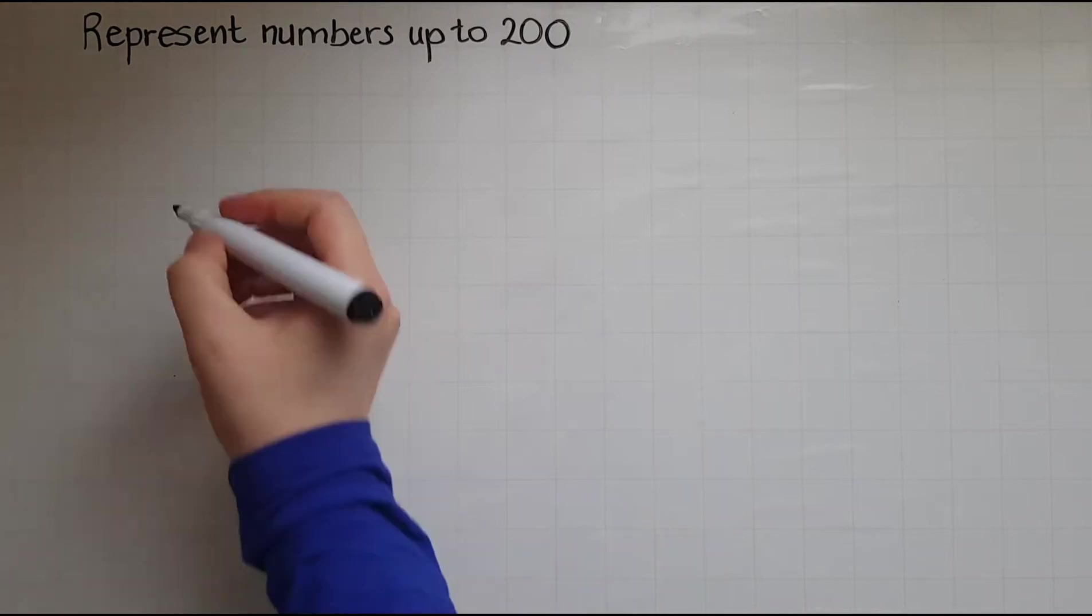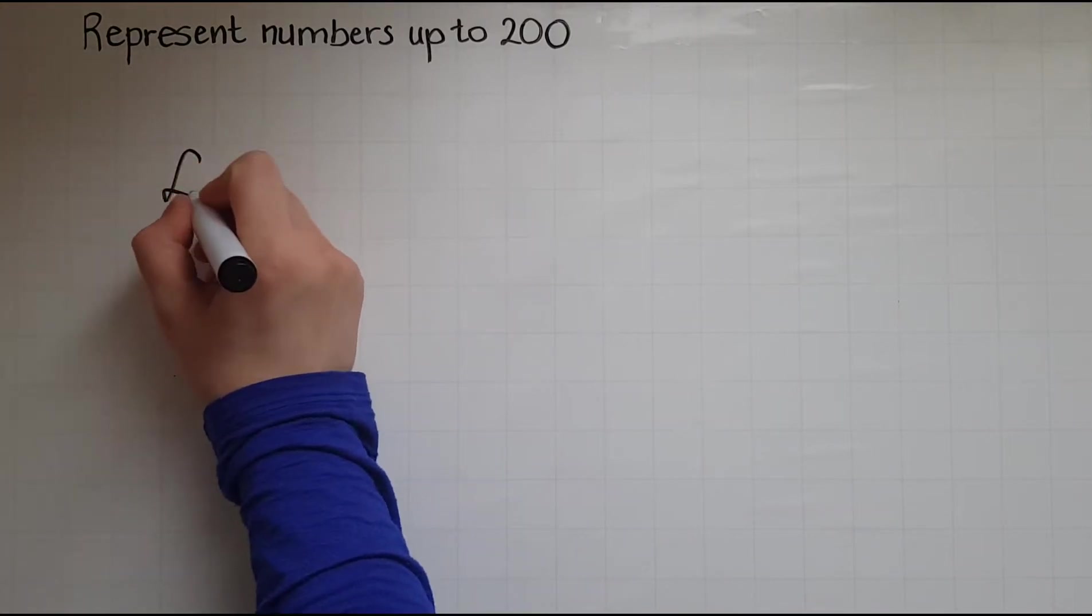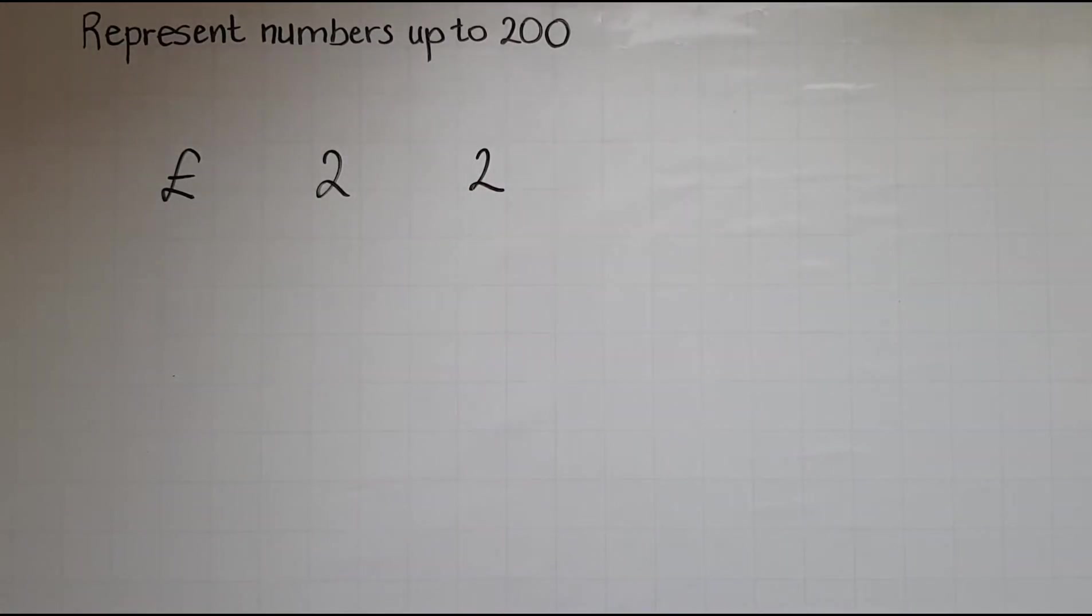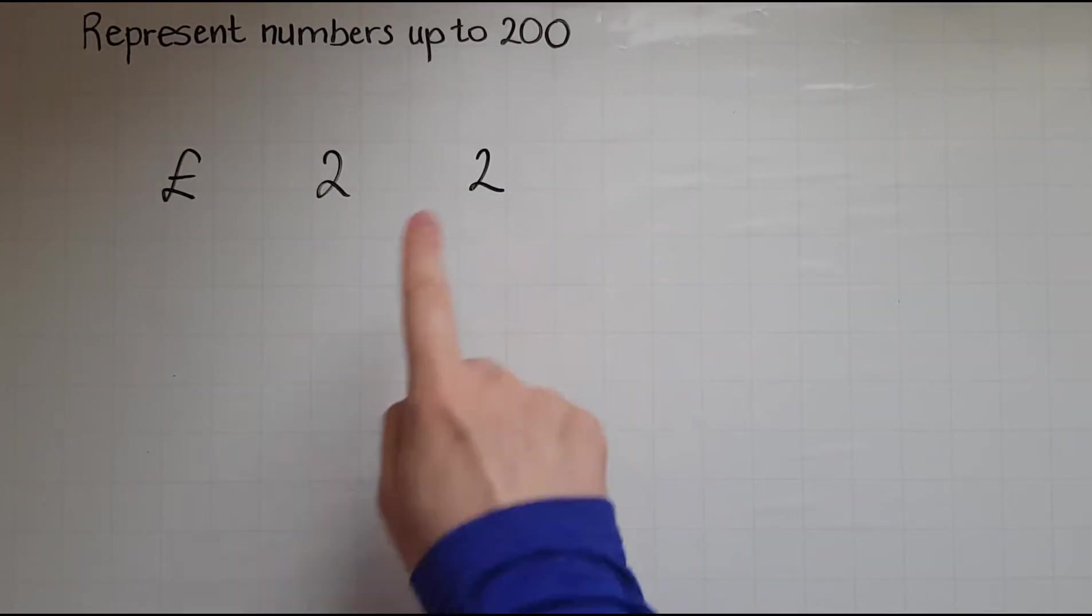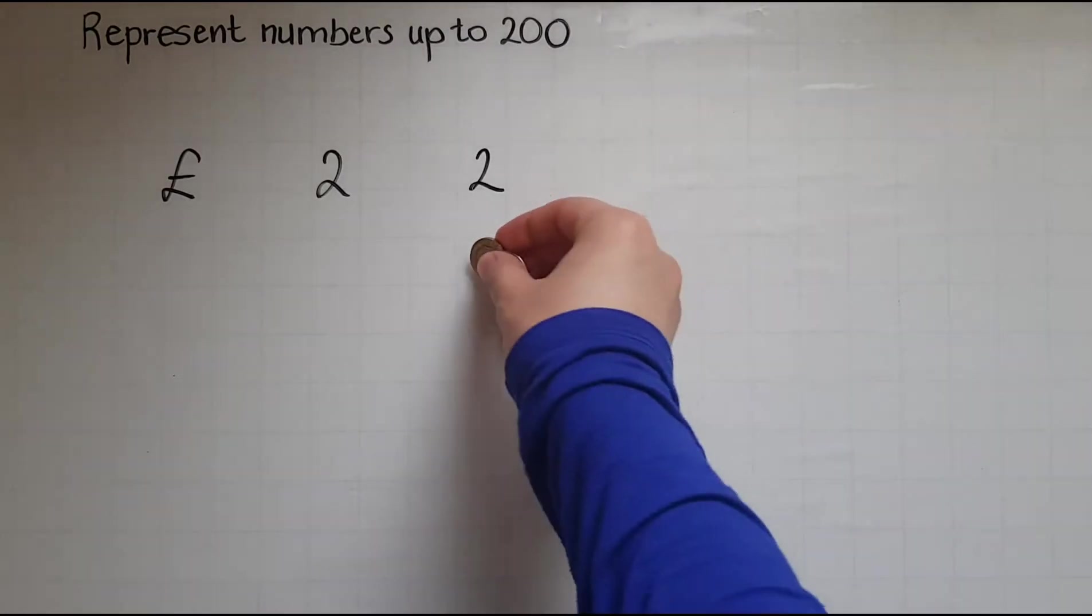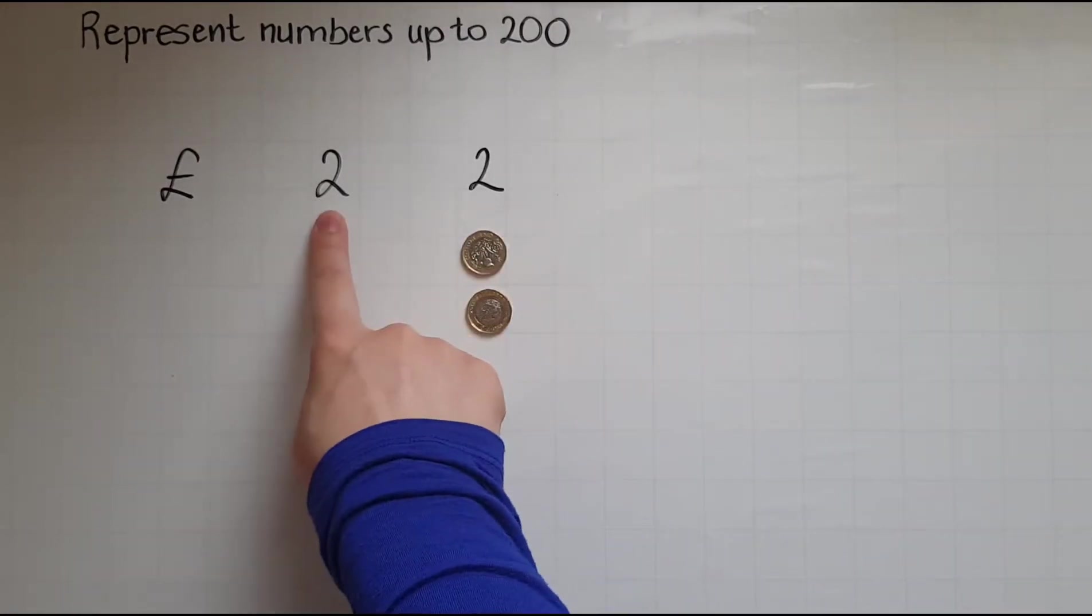So I have this amount of money. How much is that? That's 22 pounds. What does that 2 mean? As I said, 22 pounds. So that is 2 pounds and this means 20.